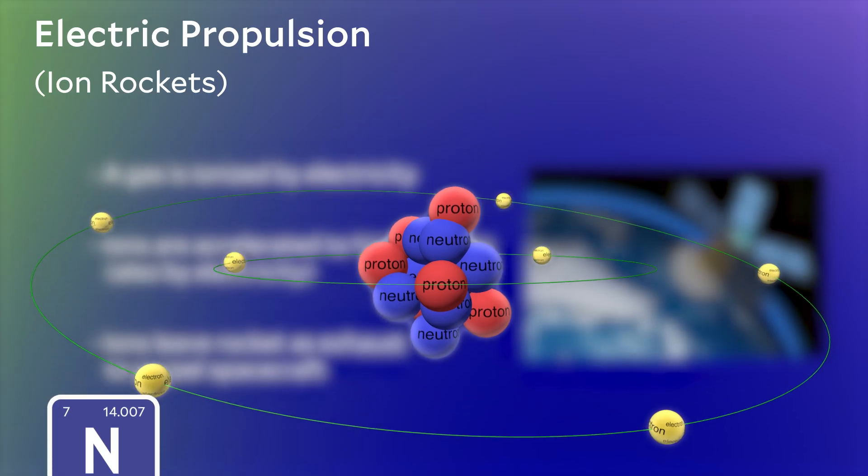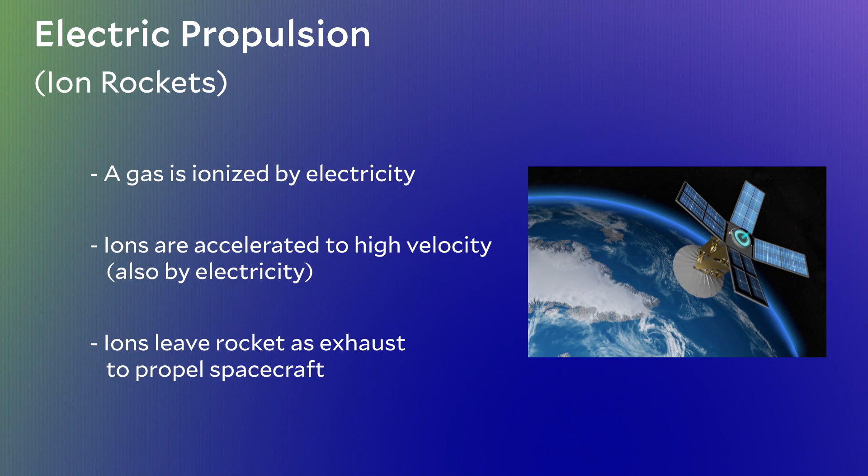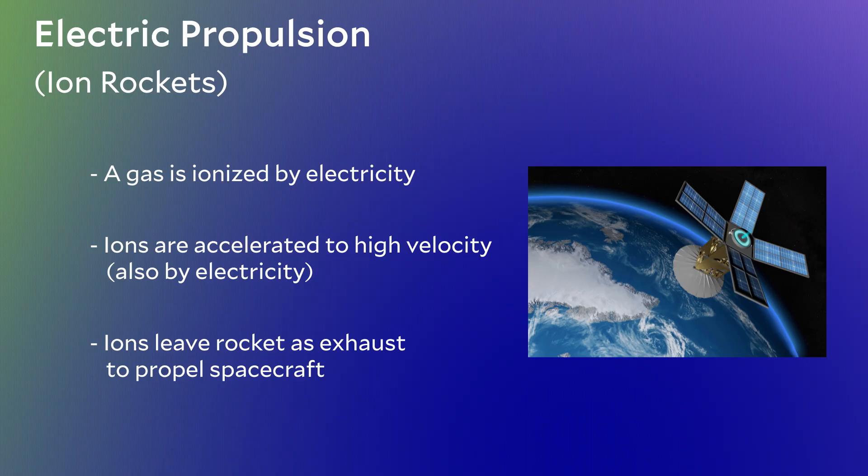However, if you strip off an electron, the atom is now electrically charged and is called an ion. If this electrically charged ion is in an electric field, it can be accelerated to super high speeds. So the idea of electric propulsion is to ionize a bunch of atoms, accelerate the resulting ions in an electric field, and then send them out the back of your rocket.